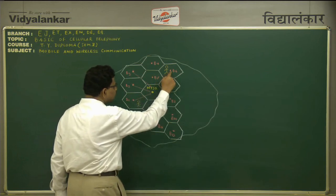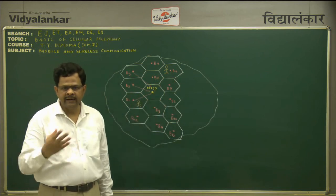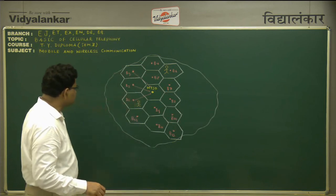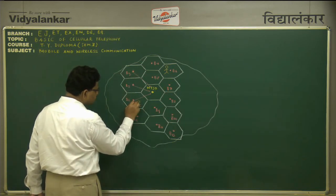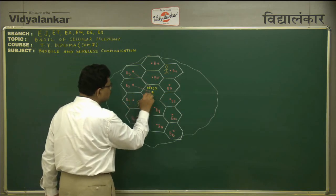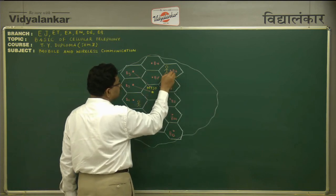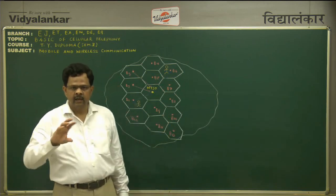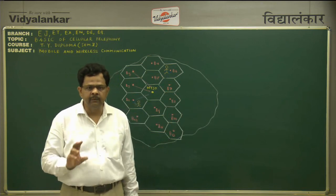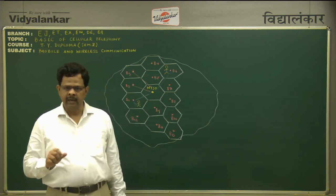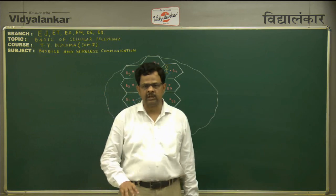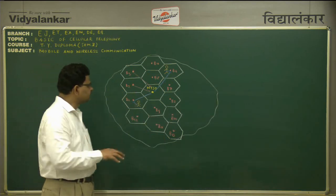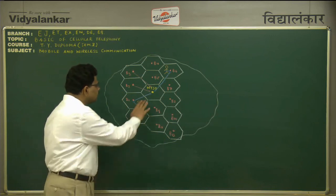Then immediately base station B6 tells the MTSO that the person they are looking for is present in base station B6. A communication link is then established: from the calling person to base station B1, from base station B1 to MTSO, from MTSO to base station B6, and from base station B6 to the called party's cell phone. A full duplex communication channel is established between the called party and calling party, and both users start conversing with each other.